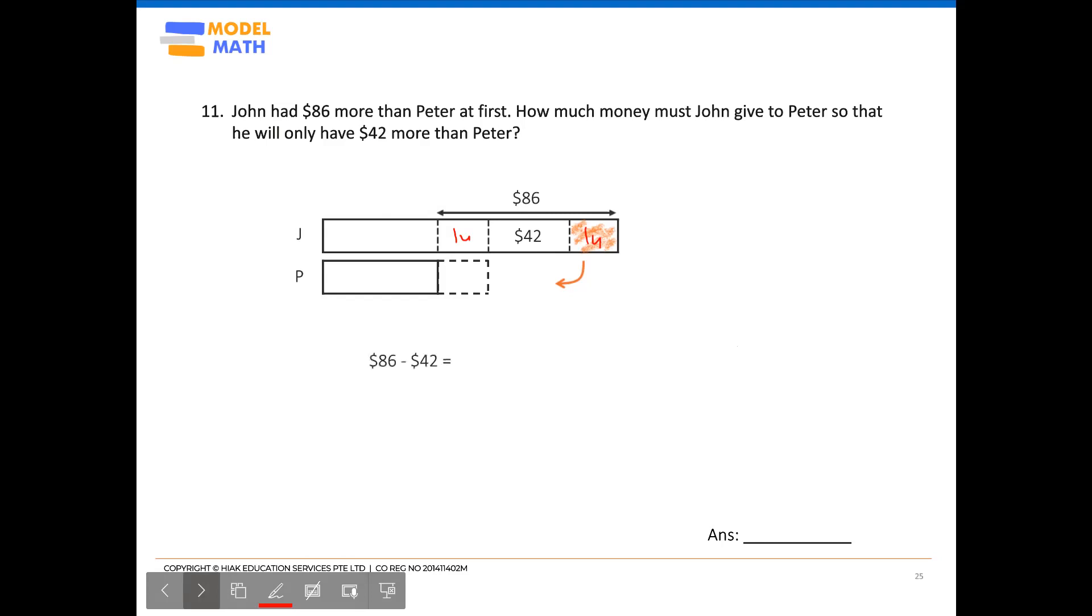So for this part, the first thing would be to take $86 minus $42, so that it would be left with the two units. And given that John would be giving away that one unit to Peter, that one unit would be $44 divided by two, which then we would reach the answer of the question, $22.